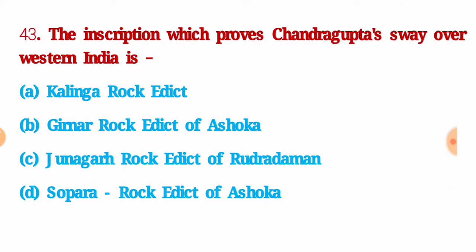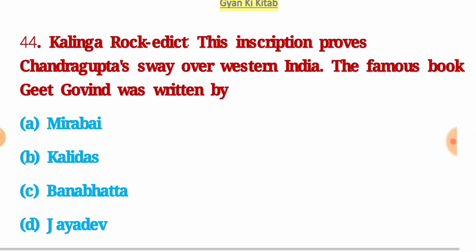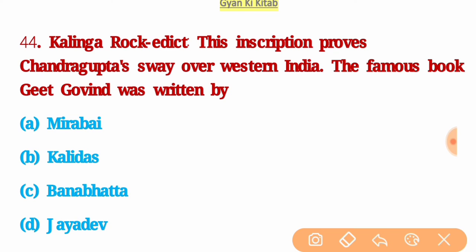Next question: the inscription which proves Chandragupta's sway over western India is — the right answer is option A: Kalinga rock edict. The famous book Geet Govind was written by — the right answer is option D: Jayadeva.